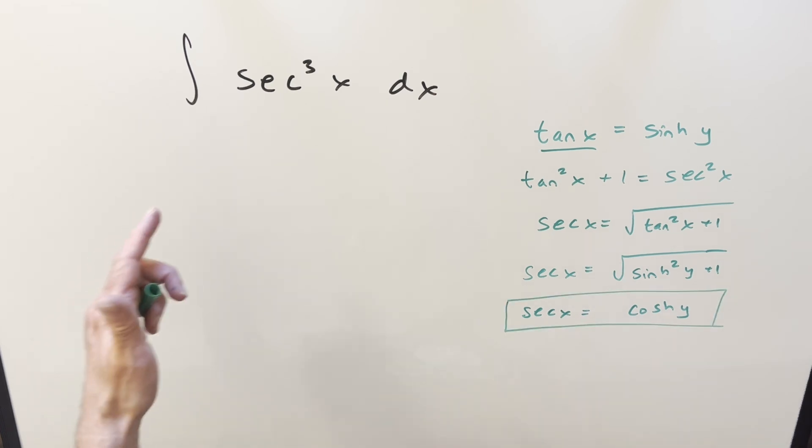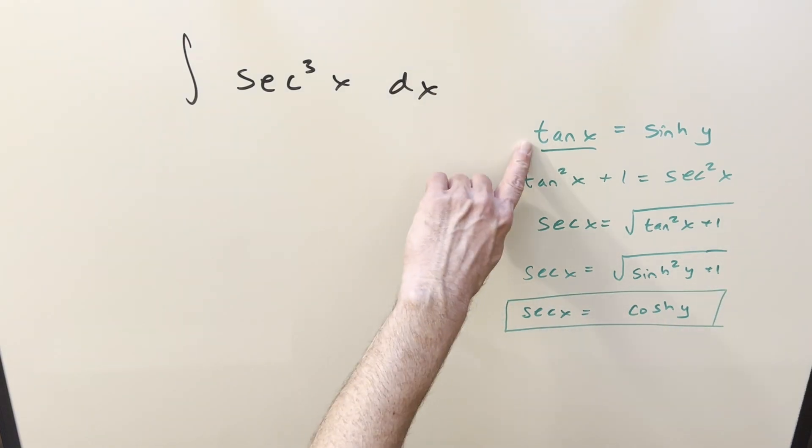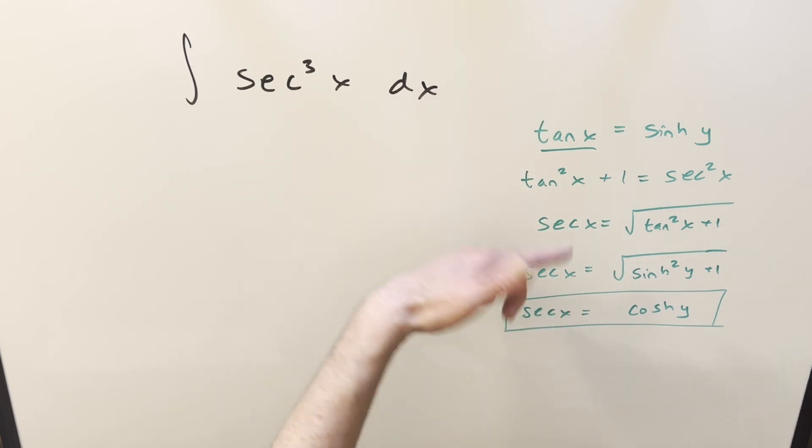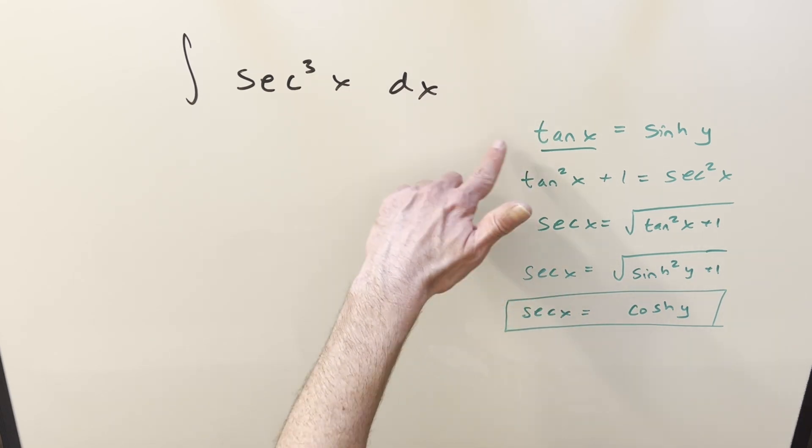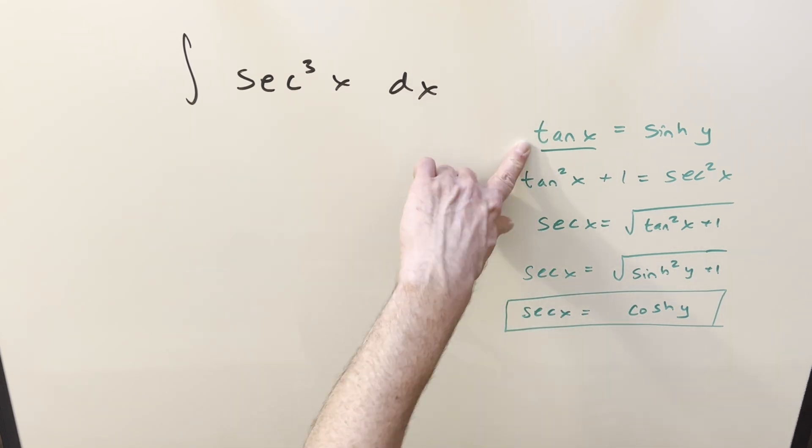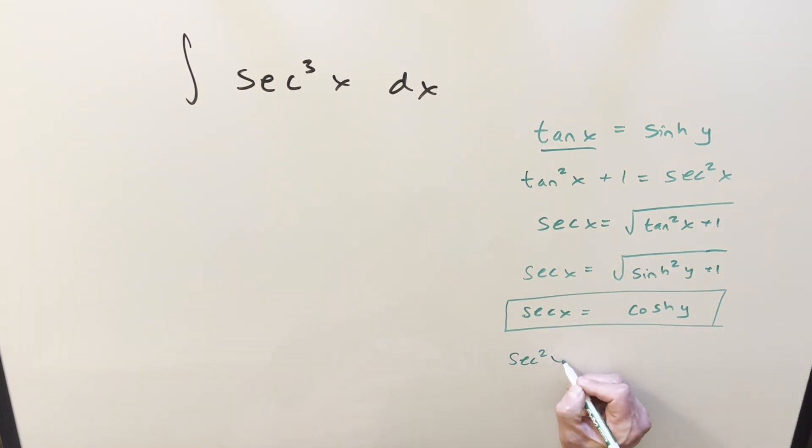Now one more thing before we substitute, let's actually, we need our derivative, we're going to need our dx value. So we'll take a derivative. So we need our dx value. Let's take it out of the first value. So what we're going to get is secant squared x dx.